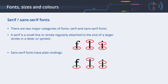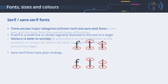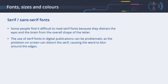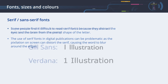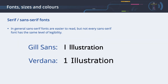In contrast, sans serif fonts have plain endings. Some people find it difficult to read serif fonts because they distract the eyes and brain from the overall shape of the letter. The use of serif fonts in digital publications can be problematic, as pixelation on screen can distort the serif, causing the word to blur around the edges. So in general, sans serif fonts are easier to read on screen.